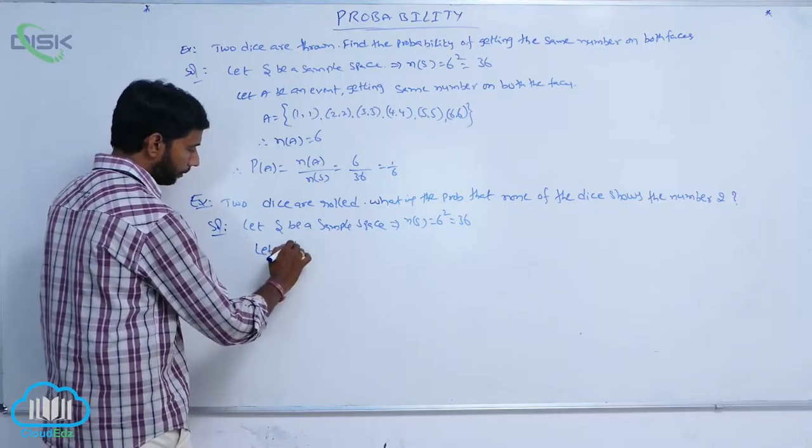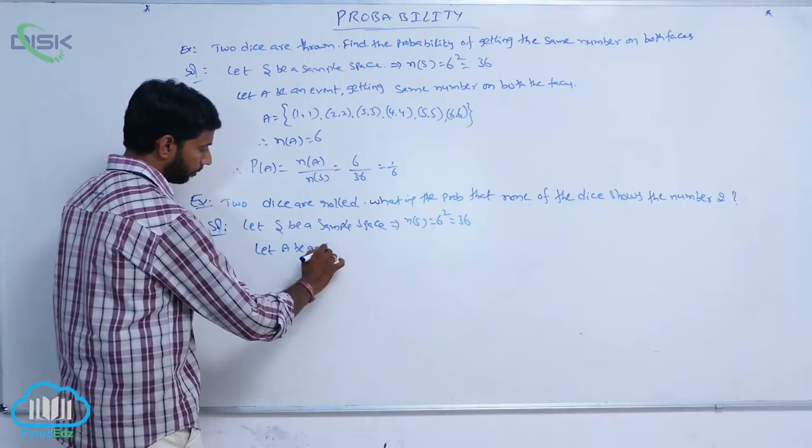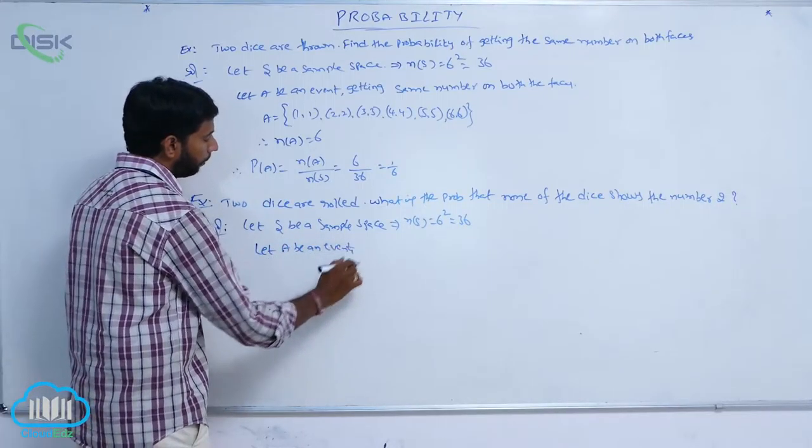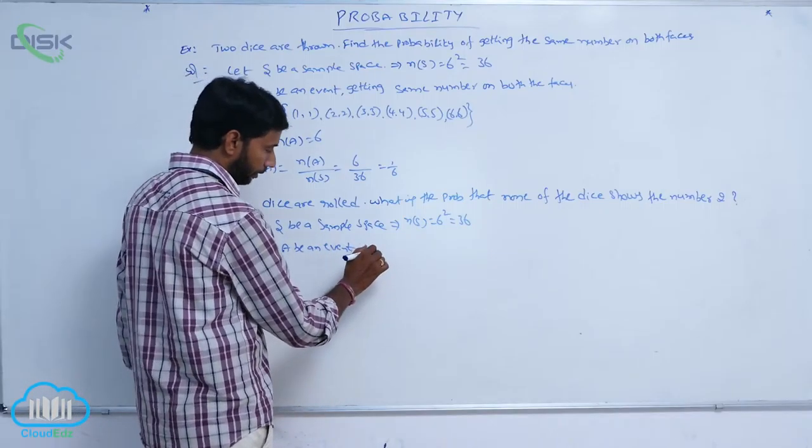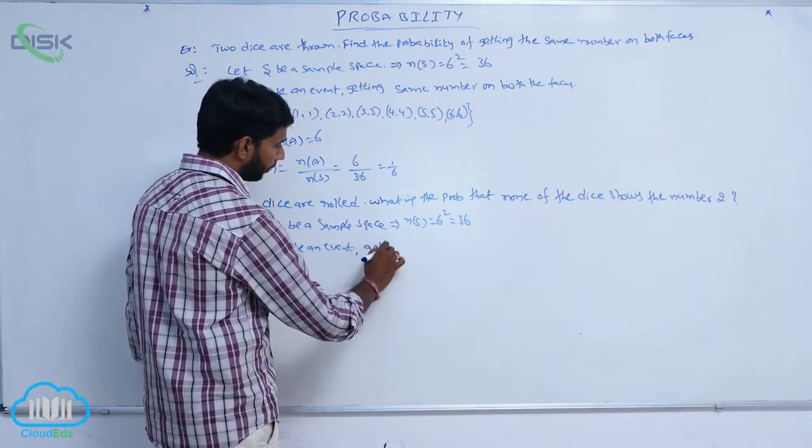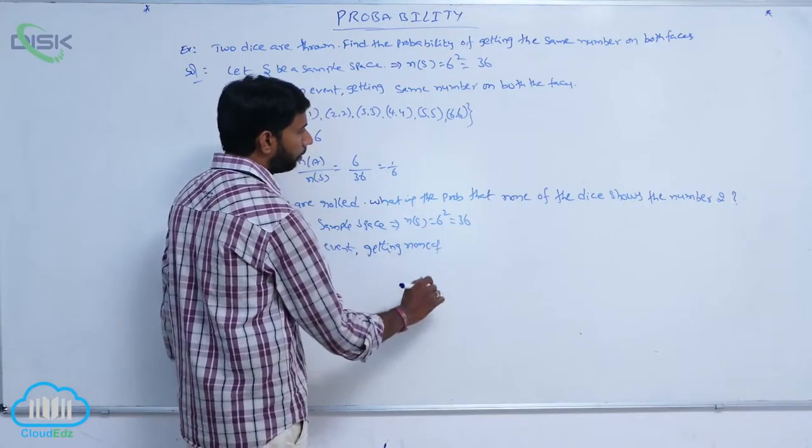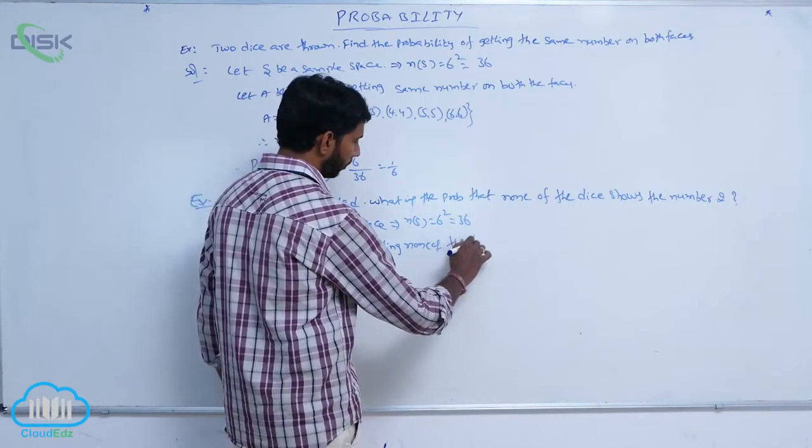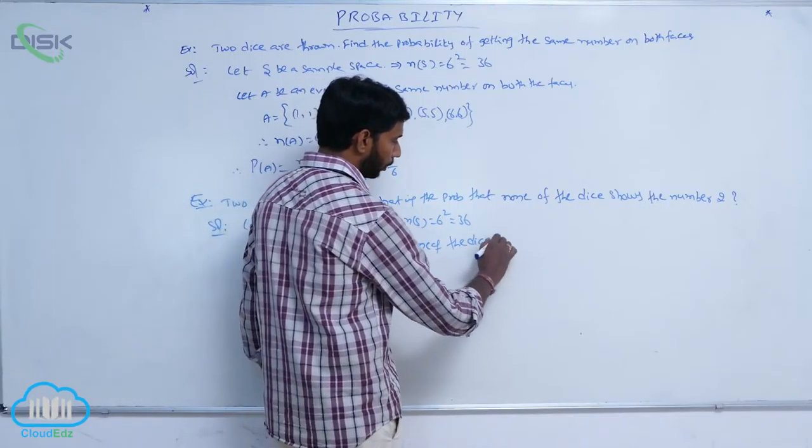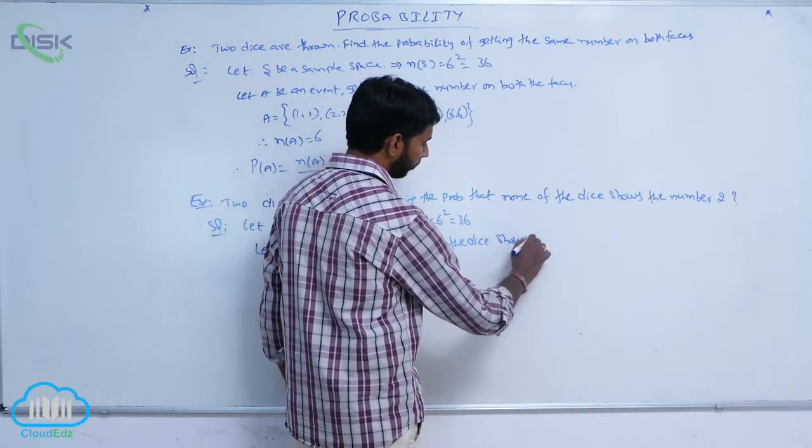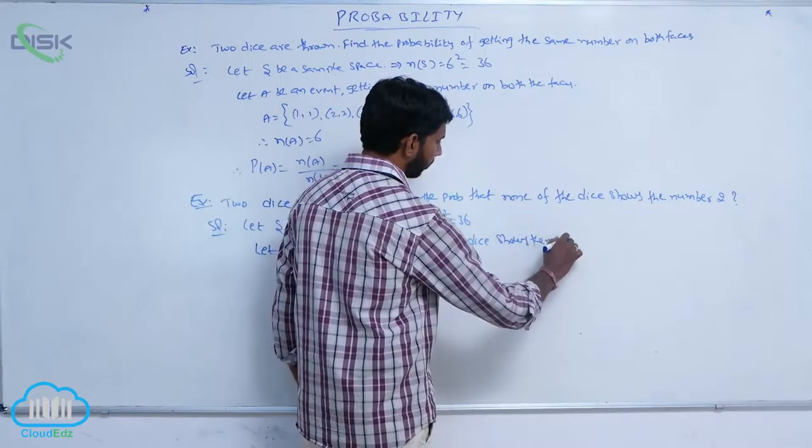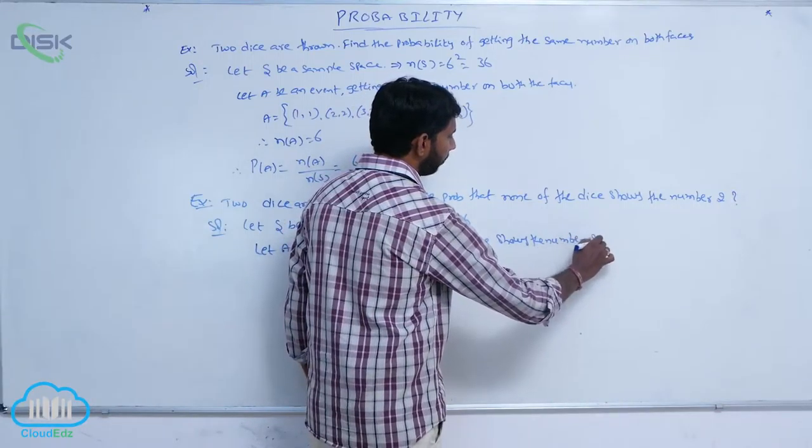Let A be the event that none of the dice shows the number 2.